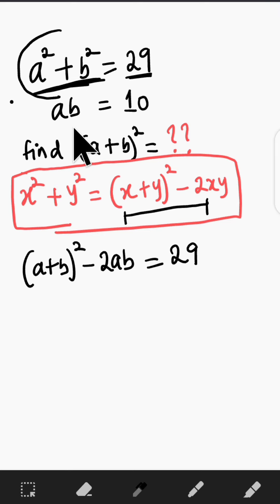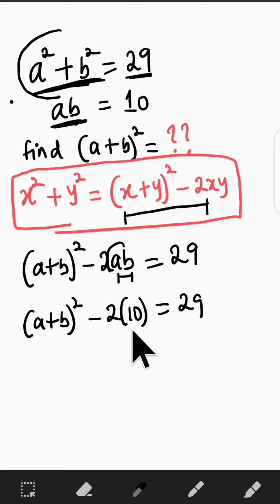Now we know what ab is. ab is exactly 10, so this quantity becomes 10. We have a plus b all squared minus 2 times 10 equal to 29. We just replace ab by 10. And 2 times 10 is 20. So we have a plus b all squared minus 20 is equal to 29.